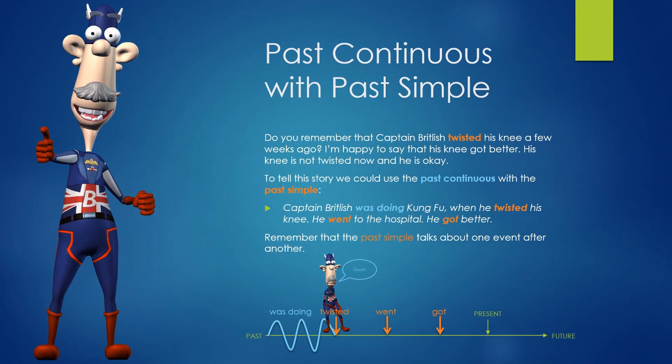Past continuous with past simple. Do you remember that Captain Britlish twisted his knee a few weeks ago? I am happy to say that his knee got better — his knee is not twisted now, and he is OK. To tell this story, we could use the past continuous with the past simple: Captain Britlish was doing kung fu when he twisted his knee. He went to the hospital. He got better. Remember that the past simple talks about one event after another.